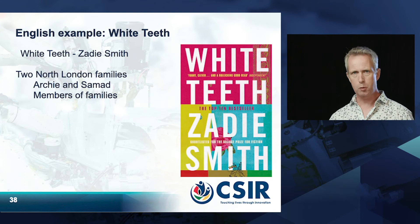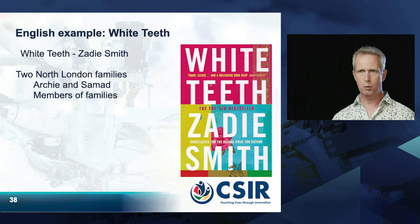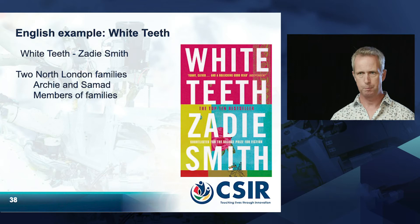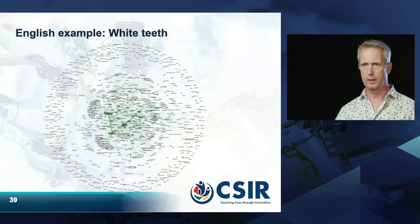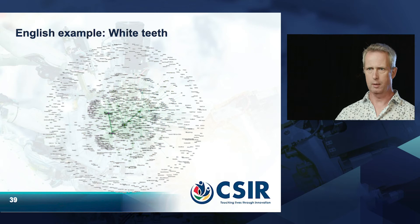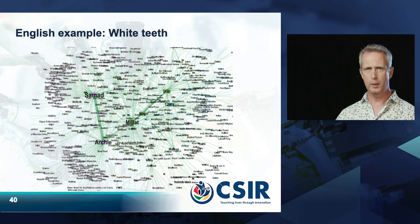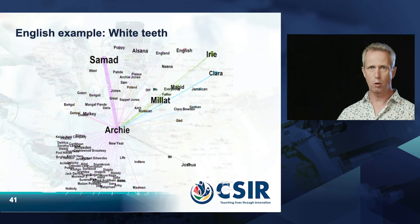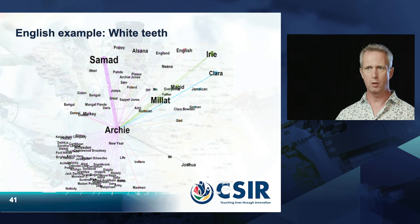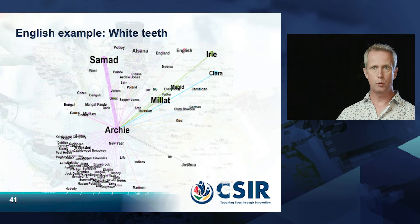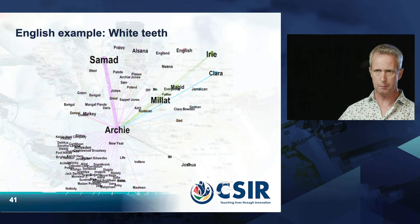The first text used was White Teeth by Zadie Smith, about two North London families where Archie and Samad are the main characters. Identifying the names, finding relationships, and visualizing the network produces a result that initially seems chaotic. But zooming in, the strongest relationship found by the automatic tool is actually between the two main characters, and other names with relatively strong relationships are family members. This helps with close reading analysis, and these results come from the distant reading analysis.